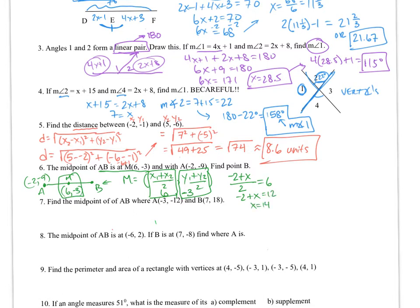We can do the same thing with the other point. I know that this y, negative 9, plus my second y value over 2 is going to be this value of negative 3. Cross multiply, negative 9 plus y equals negative 6. Bring this over, add 9 to each side, you get y equals 3. So point B is at the value 14 comma 3.